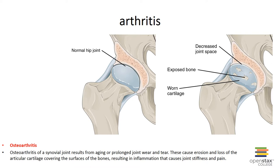Gouty arthritis, or gout, is caused by too much uric acid in the blood. Most of the time, having too much uric acid is not harmful, and many people with high levels never get gout. However, when uric acid levels are too high, the uric acid may form hard crystals in your joints, causing sudden burning pain, stiffness, and swelling — usually in the big toe. These attacks can happen over and over unless gout is treated, and the condition is more common in men.